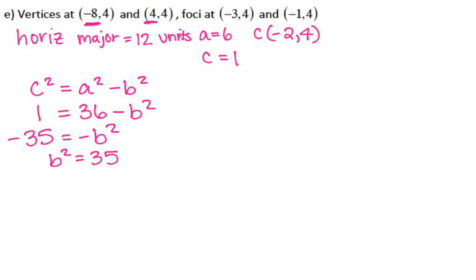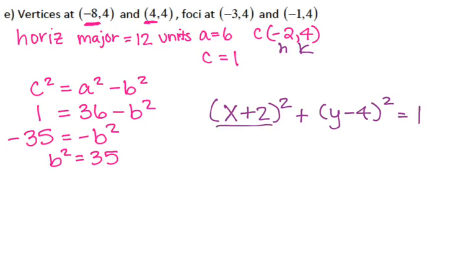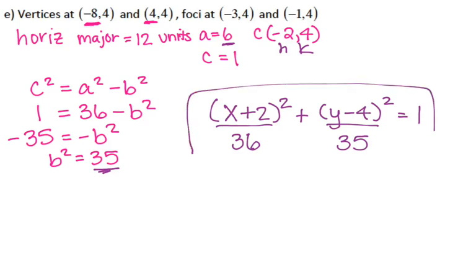So my center is (−2, 4), giving (x − (−2))² over 36 plus (y − 4)² over 35 equals one, with A² underneath X since we have a horizontal major axis and B² underneath Y. And that is how you write equations for ellipses when you're given pieces of information.